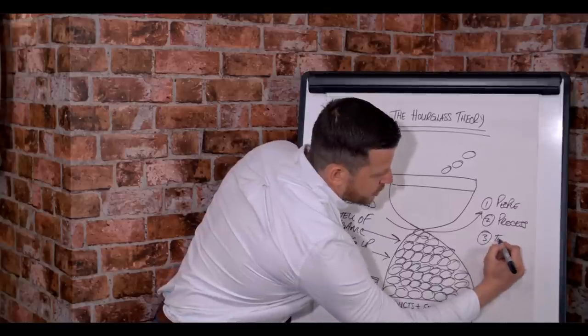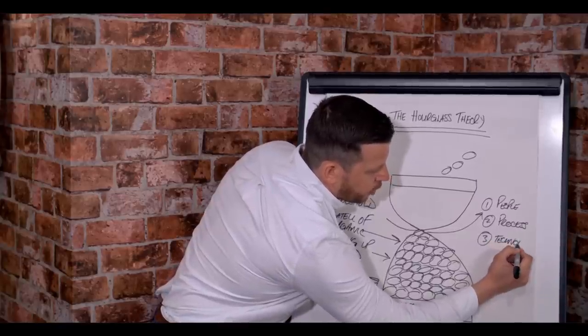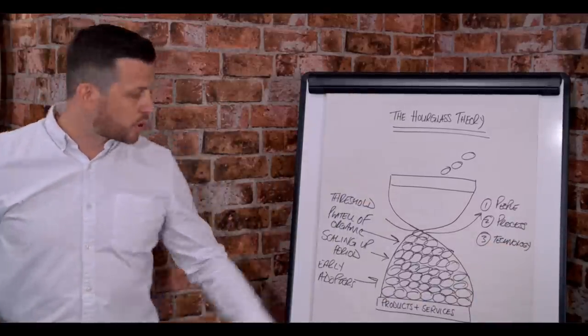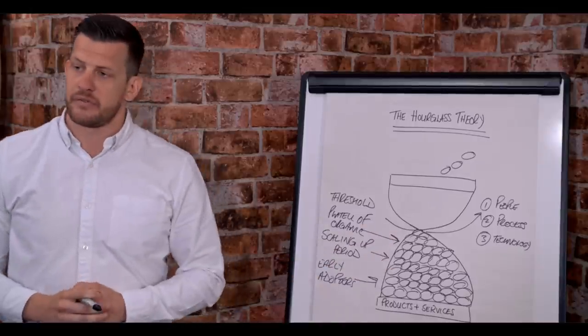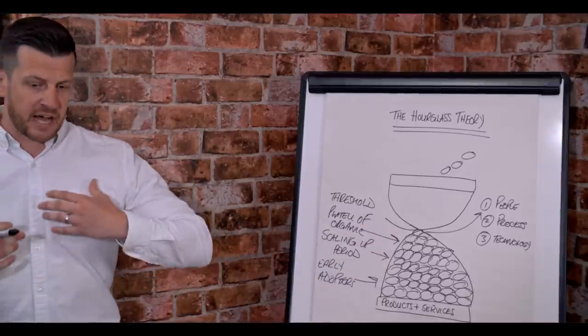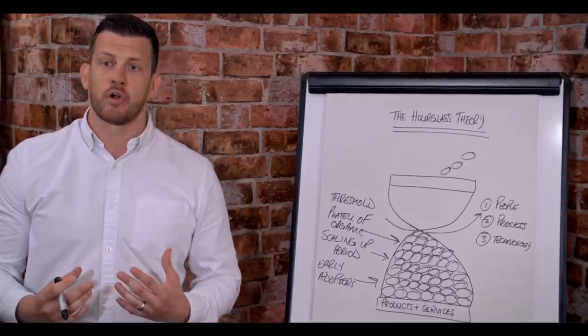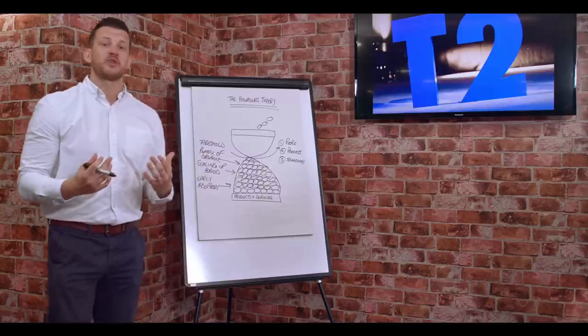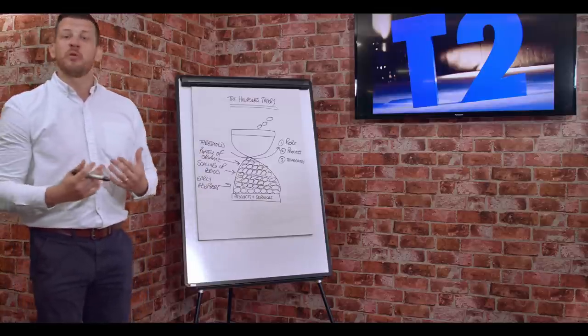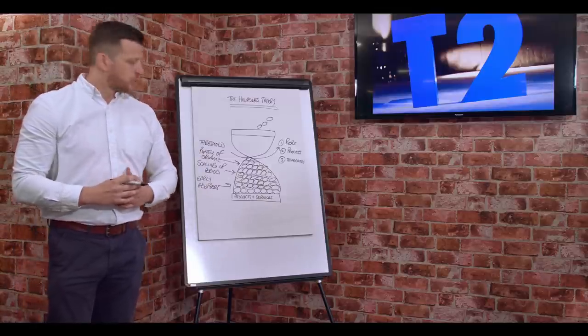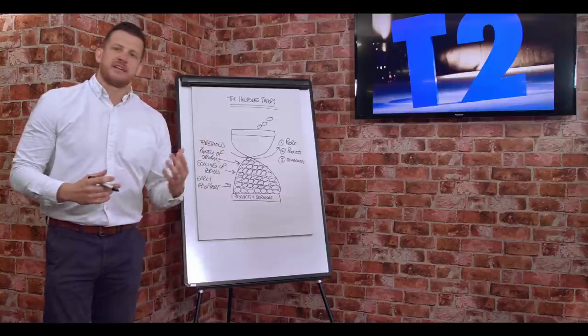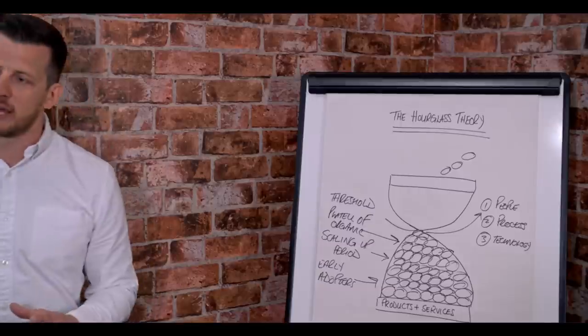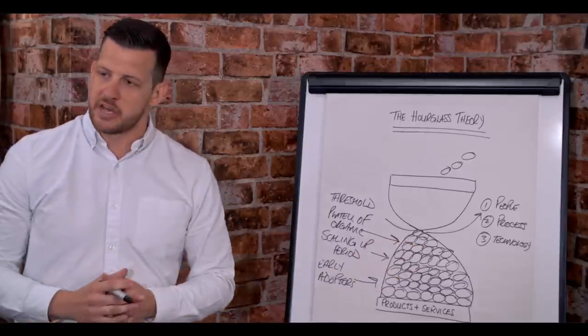Number three: technology. Technology we find is the third reason why people hit the sustainability threshold in the hourglass theory. They have either grown too fast and not brought in the right technology to support business growth or they've bought and implemented too much technology and it's not really working for the organization. So people, process and technology are the fundamental reasons why businesses, no matter how small or large, reach the sustainability threshold.